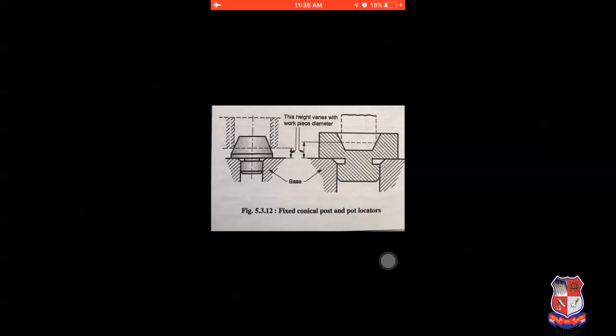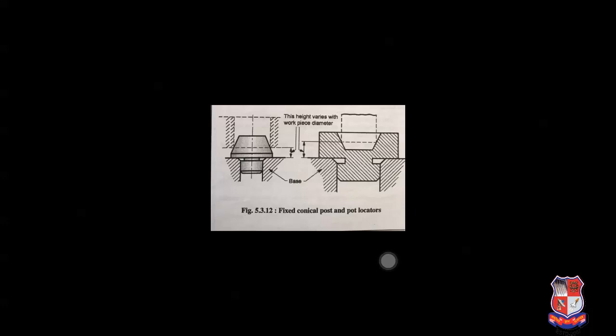The second type is the fixed conical post locator. Conical post locators are used to locate the workpiece from a hole or shaft. Their application purpose is more or less the same as the cylindrical post locator. The conical locator is used where the axis of the cylindrical workpiece features are to be located and when the diameter of the cylindrical feature is not accurate.